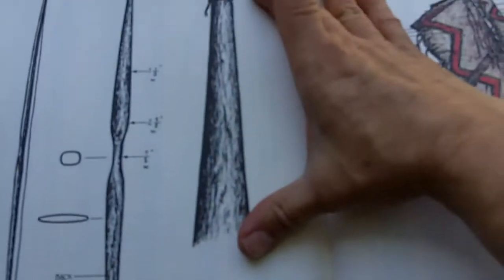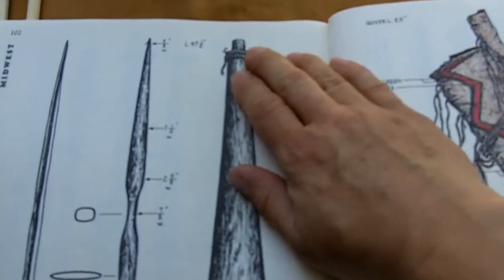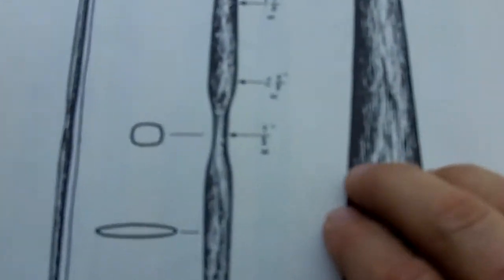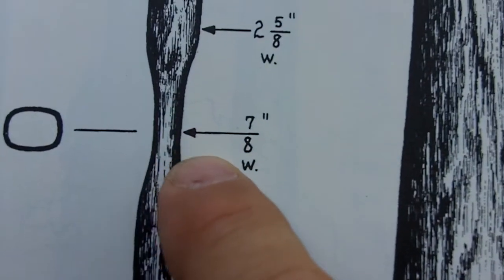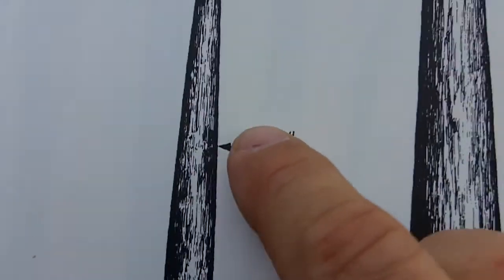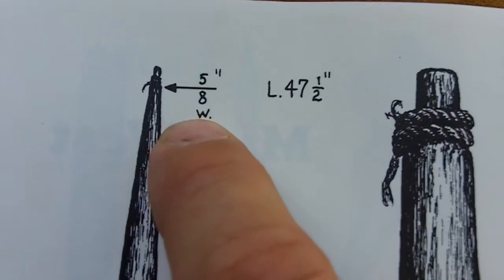This is an actual size representation of the limb. Let's see if we can get a close-up of the dimensions, 7-8 wide, 2-5-8, tapering down to 5-8.